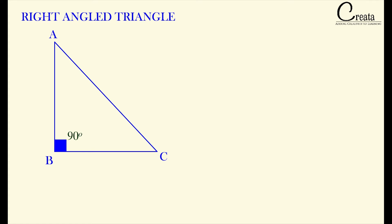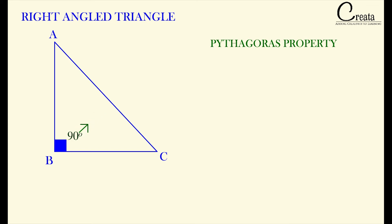The Pythagoras property is limited to a right angle triangle only — it is only and only limited to a right angle triangle. The side opposite to the 90 degree angle is called the hypotenuse, and the other two sides are known as legs of the right angle triangle.